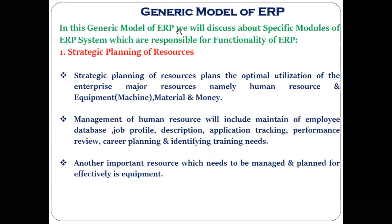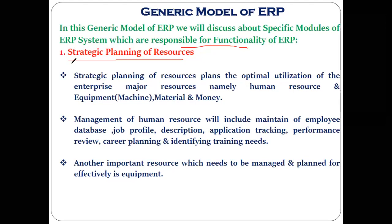In the generic model of ERP, we discuss the specific modules responsible for the ERP system's functionality. The first is strategic planning of resources. The general resources of any business or industry are the main four: man, machine, material, and money. The strategic planning module does long-term planning related to these resources, whereas the operational planning module does short-term planning — daily or weekly planning — of these same resources.